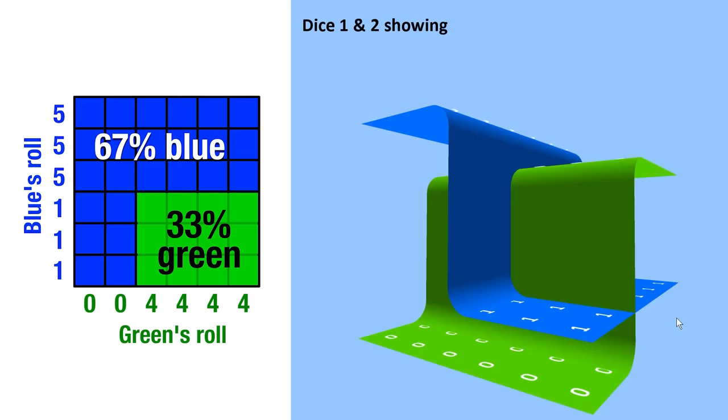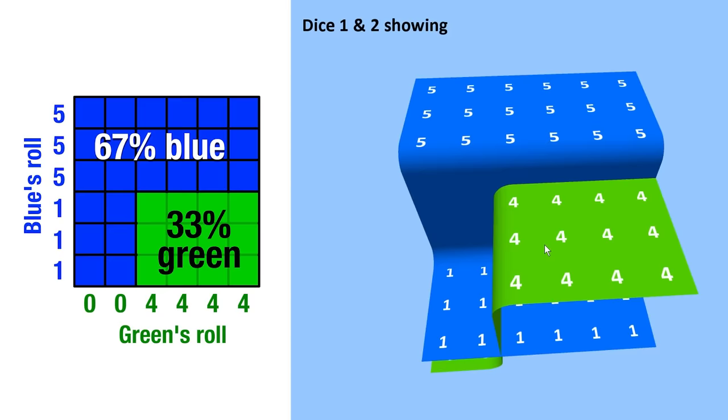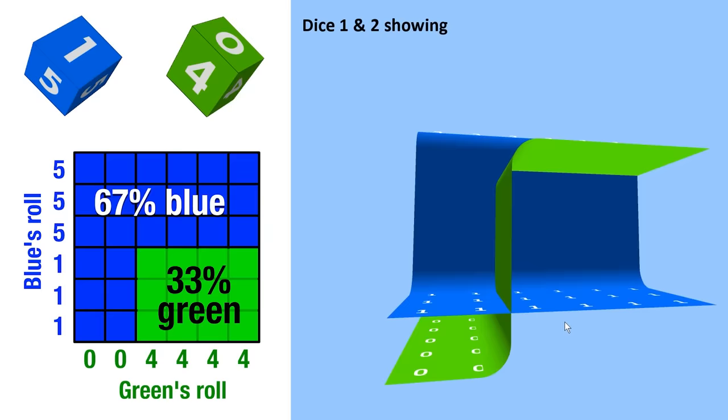So, since the x-axis determines the green die's outcome, you can see that from left to right, the green die changes its height. And for the blue die, it's the y-axis, which is why on the lower end, it's 1s, and on the higher end, it's 5s. So from above, we can see that blue indeed wins 24 out of 36 times, which is 2 thirds, and that's why it wins the match.